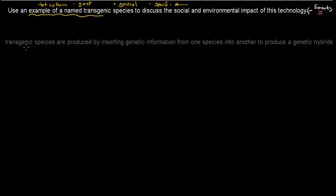So what I wrote first is: Transgenic species are produced by inserting genetic information from one species into another to produce a genetic hybrid. This is just quickly saying what a transgenic species is.